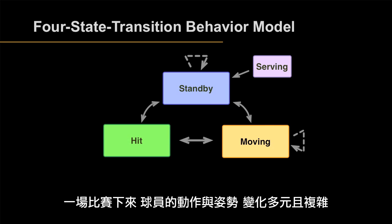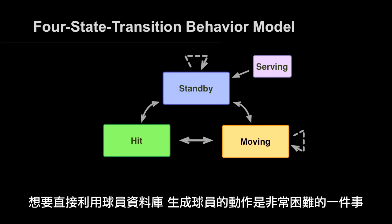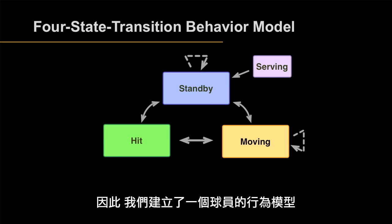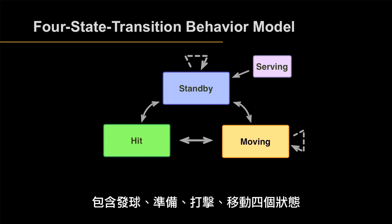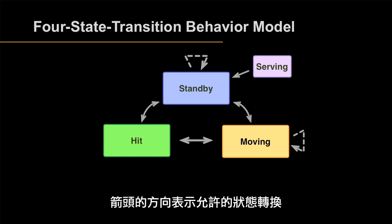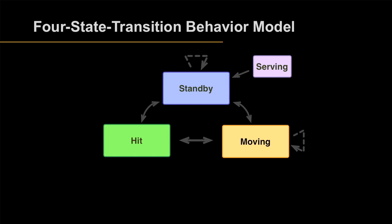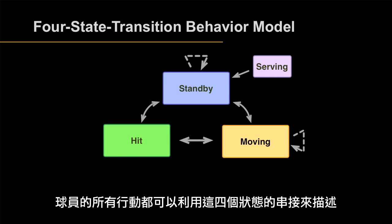Gestures and activities of the player are various and continuous. It is hard and difficult to render a vivid player without a model. Thus, we build a player behavior model consisting of serving, standby, hit, and moving states. Arrows stand for allowable state transitions. All actions of a player can be composed by these states.